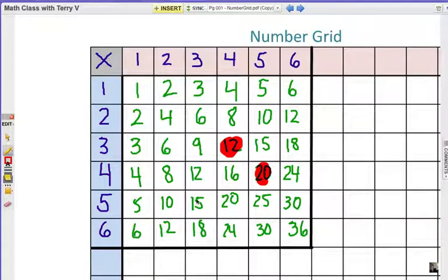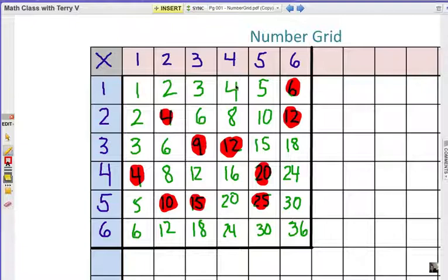Twenty. Five times four. Fifteen. Three times five. Twelve. Six times two. Four. Two times two. Four. One times four. Ten. Two times five. Twenty-five. Five times five. Six. Six times one. Nine. Three times three. Four. Four times one. Thirty. Six times five. Eighteen. Three times six. Five. One times five. Two. One times two. Three. Three times one. Good.